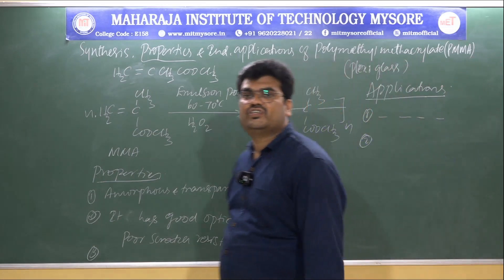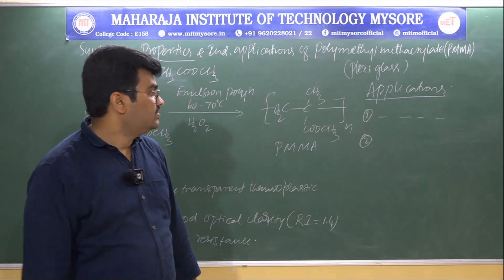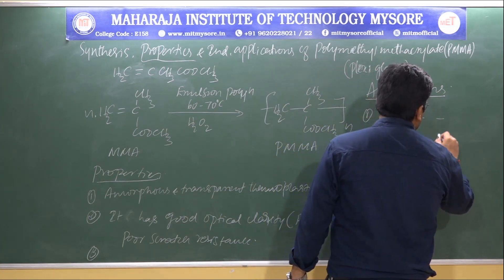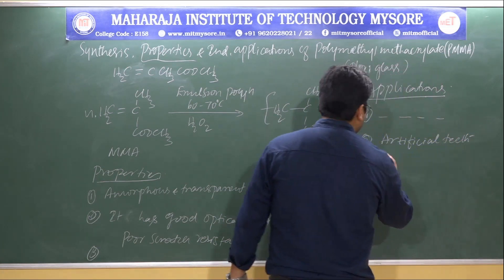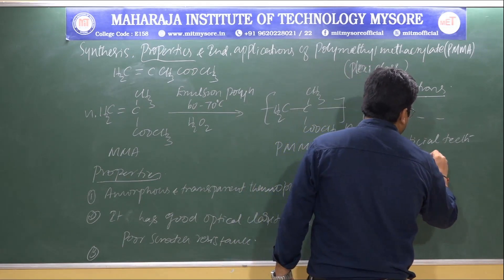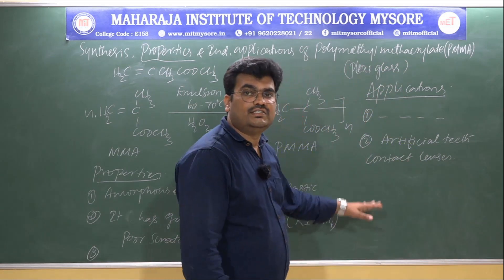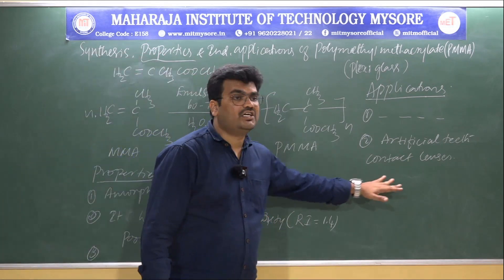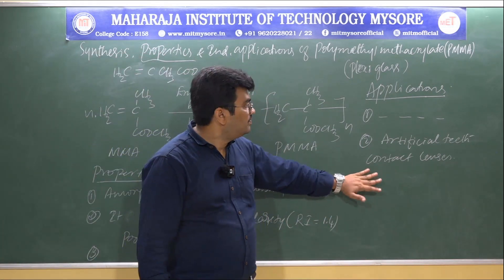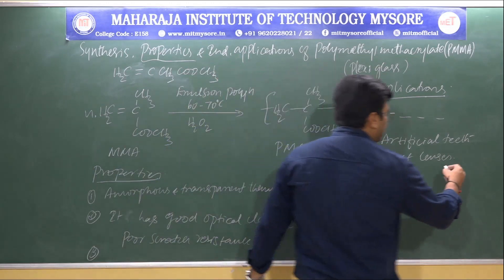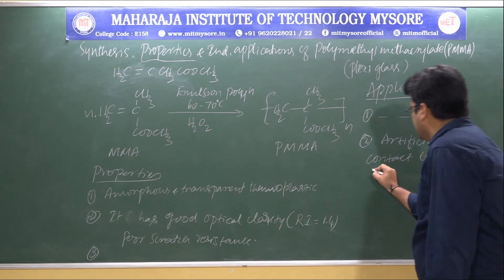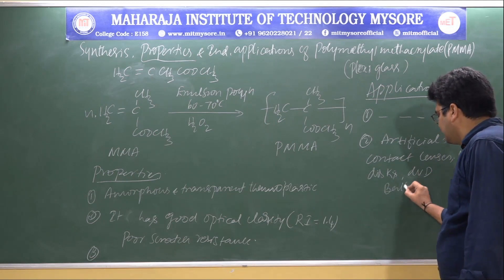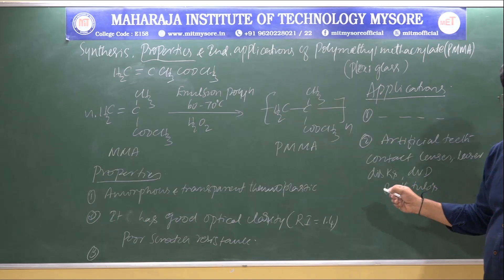PMMA is used in the manufacturing of artificial teeth and contact lenses, as well as laser discs and DVDs. Transparent bathtubs and transparent wash basins can also be prepared using polymethyl methacrylate.